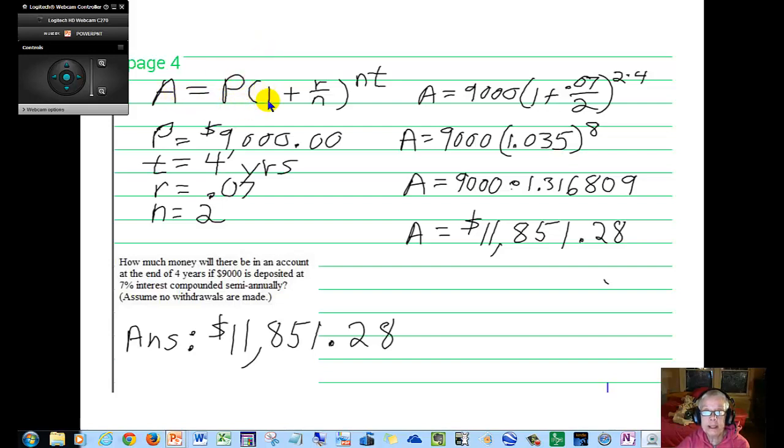A equals P parenthesis 1 plus R over N parenthesis closed to the NT power. What this means is money accumulated over time after you put P dollars in an interest-bearing account. R is the interest rate written in decimal form, N is the number of compounding periods, how many times per year your interest is calculated and added to the principal and to the previous principal and the previous principal and so on, all to the N times T power.